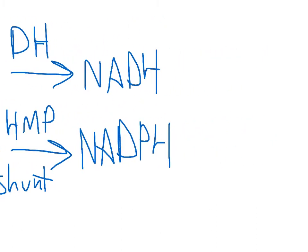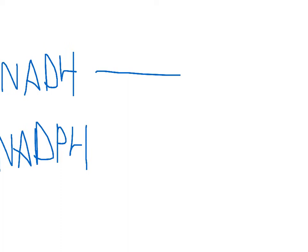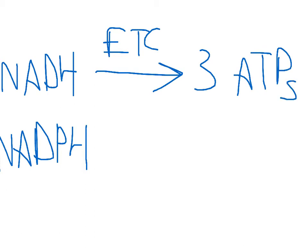NADH is then used in the electron transport chain to make three ATPs, and you can remember the number three because it's B3. NADPH is used in both steroid and fatty acid synthesis.